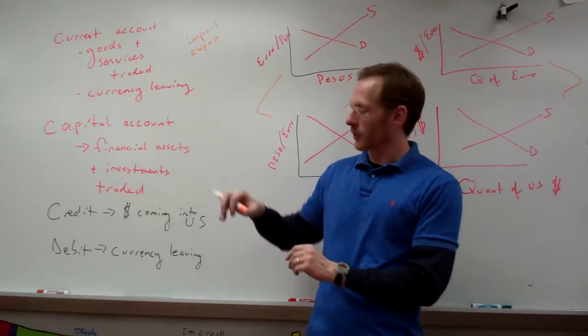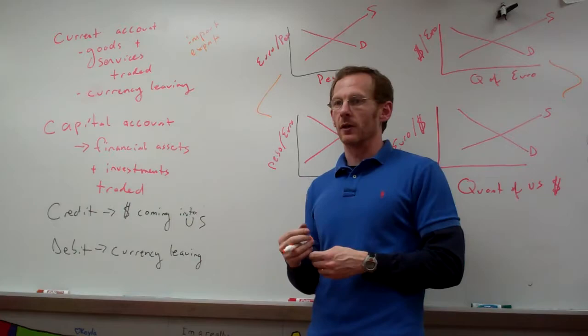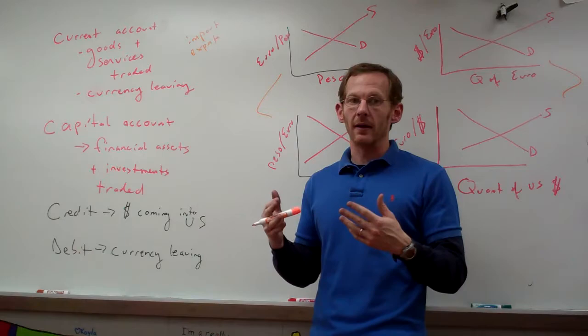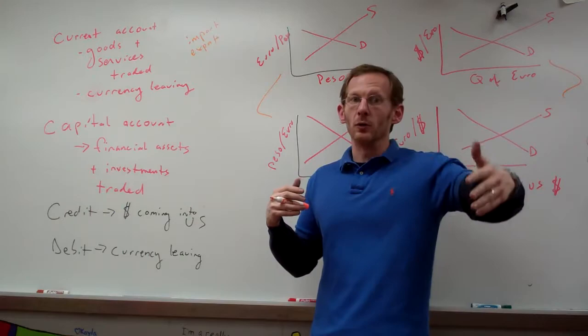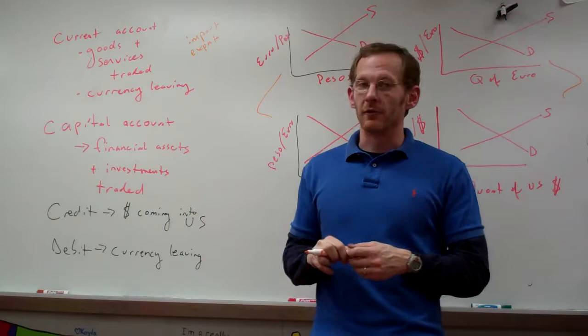To summarize: a credit is when money is coming into America; a debit is when money is going out. Current accounts cover goods and services that are imported and exported, and also currency transfers — for example, if people in America send money to family in Canada, that is money leaving the United States, which is a debit.